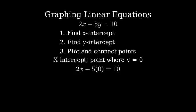2x minus 5 times 0 equals 10. Simplifying, we get 2x equals 10. So, x equals 5. Therefore, the x-intercept is the point (5, 0).